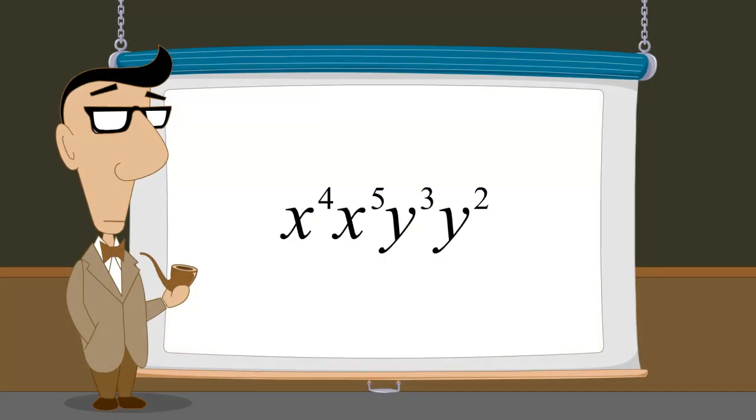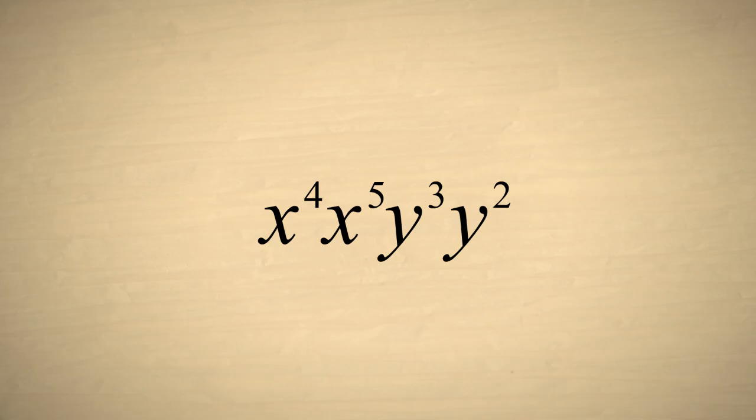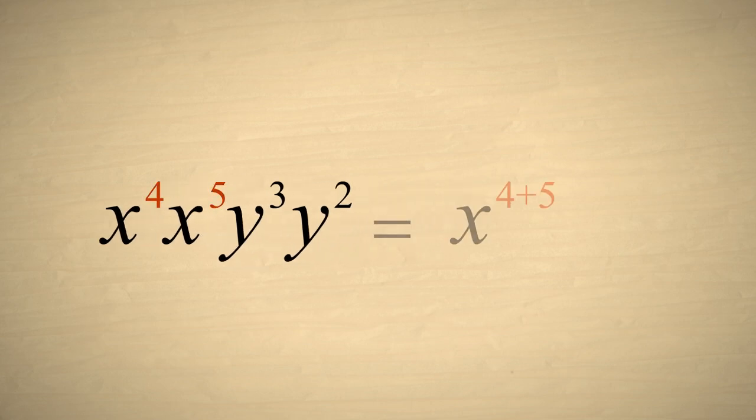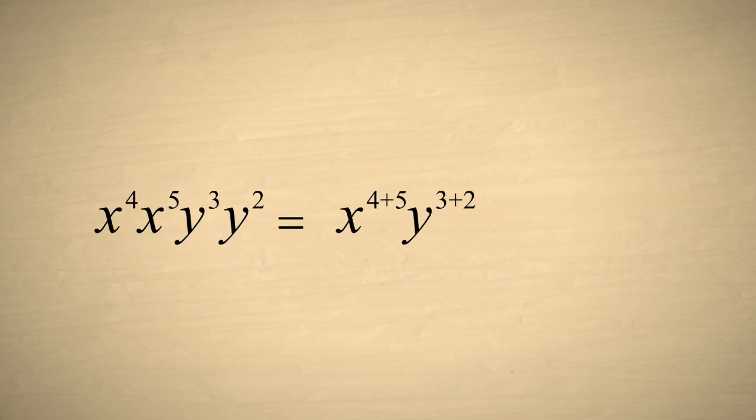Let's try an example with two different variables. Remember that we can only add exponents of terms whose bases are the same. Therefore, we can add the exponents for the x's and the exponents for the y's but we cannot combine the x and y terms. The result is x to the ninth times y to the fifth.